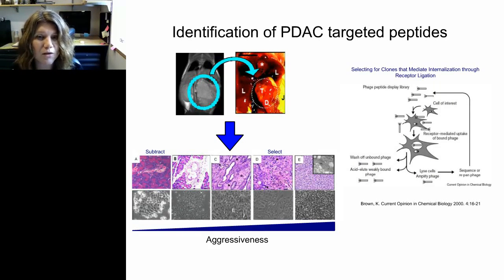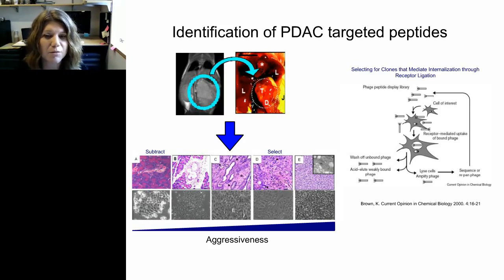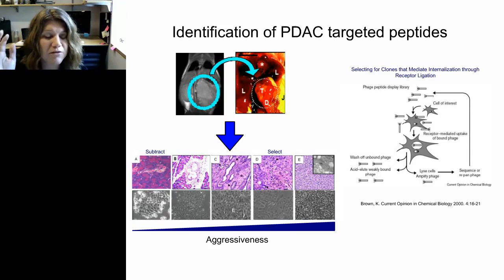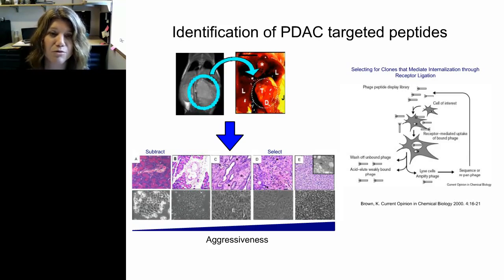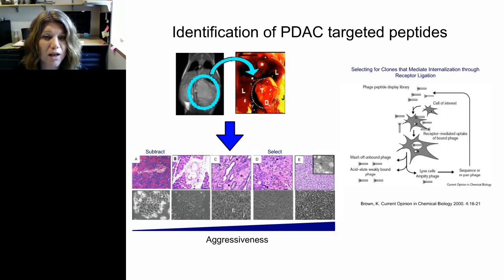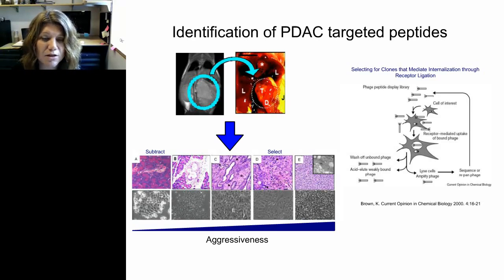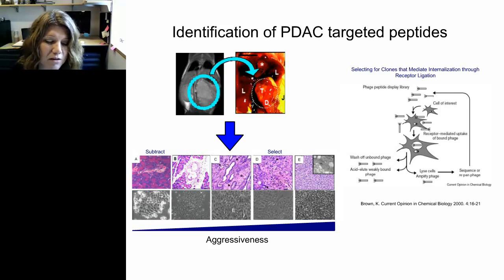With whole cells, only phage accessible to the cell surface will bind. You can even do this in vivo — Renata Pasqualini and Erkki Ruoslahti pioneered this, showing you can distinguish blood vessels from different organs by binding peptides, calling them vascular zip codes. For our screen, we took cells isolated from the mouse models, incubated phage with cell lines, allowed binding and internalization, washed away non-binders, eluted off the cell surface, lysed cells, and recovered internalized phage, then subtracted against normal pancreatic cells.